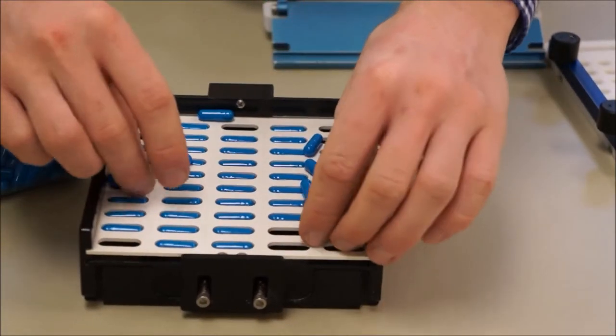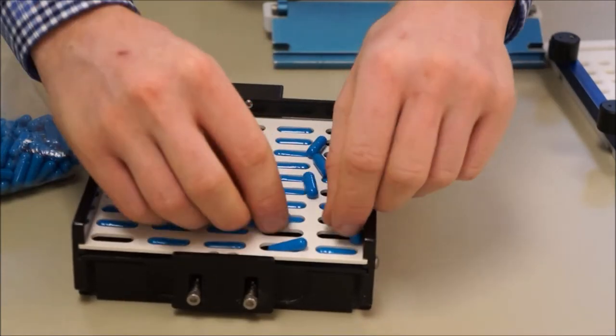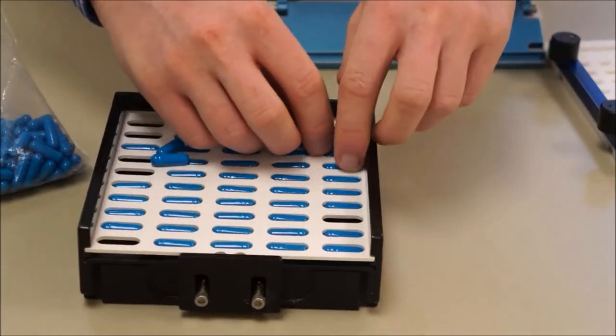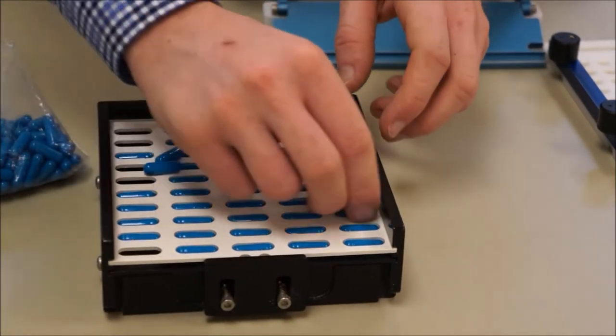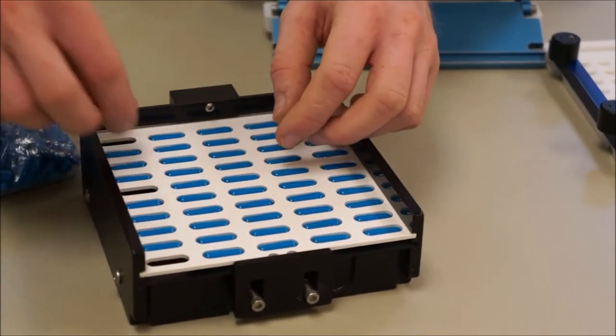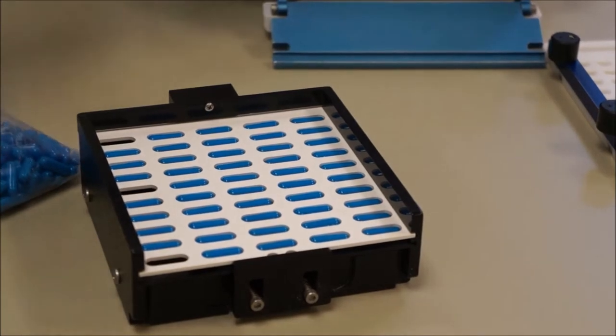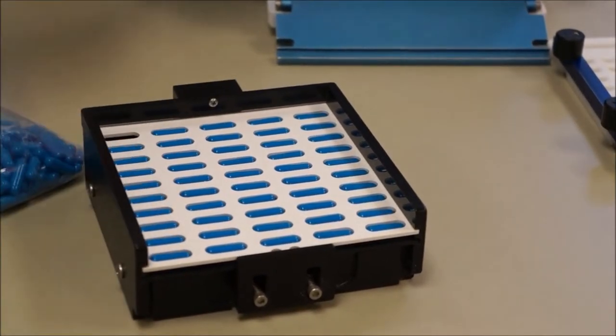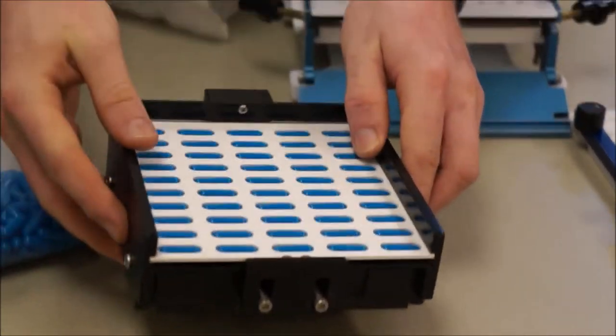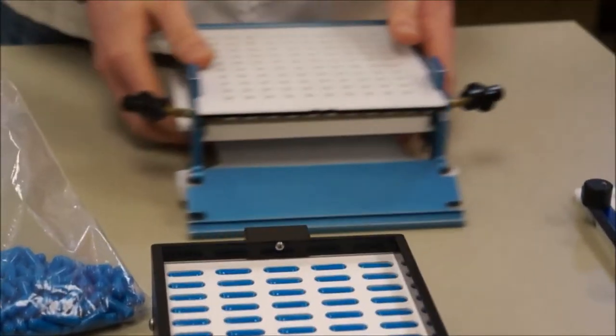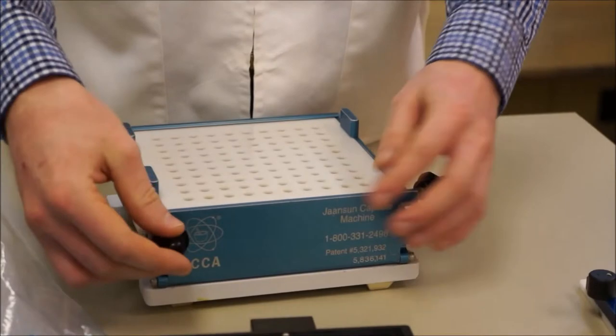What this does is it places each capsule into each hole of this next plate I'm going to show you, and actually rotates the capsules in the correct orientation so that the correct side is on top and the other side is on the bottom. This is important because one side is bigger than the other and holds more powder for the capsule.